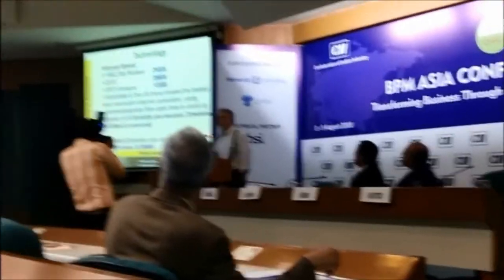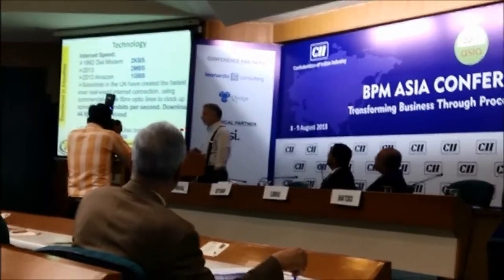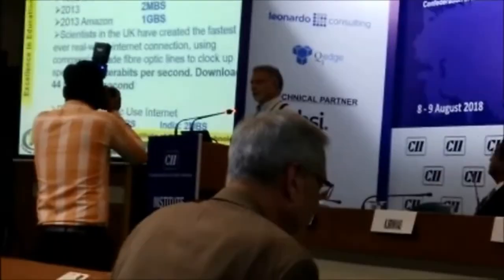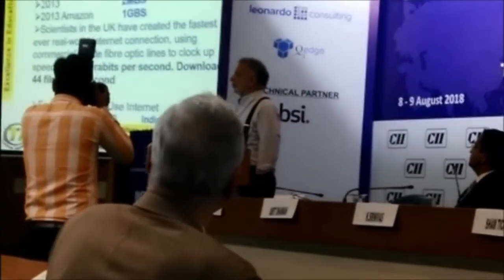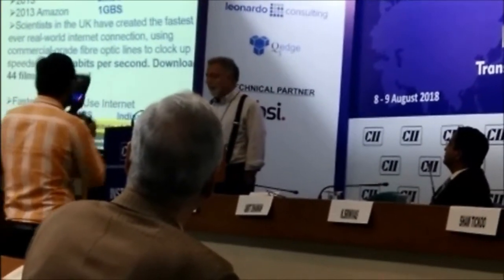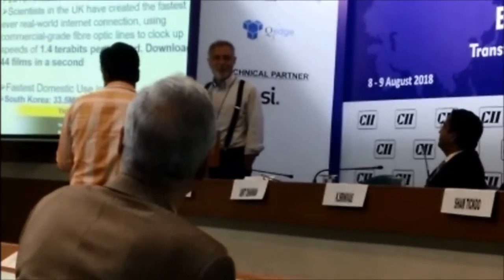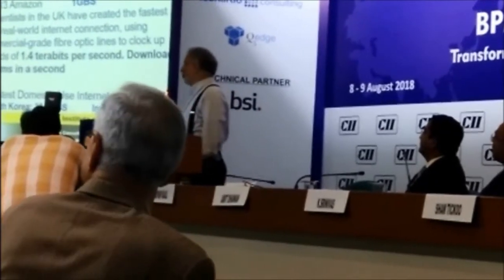Now take internet speed. In 1992, when I started using the internet, it was done in dial-up mode. The speed was about 2 kilobits per second. Then in 2013, it went to 2 megabytes per second. Amazon tested a 1-gigabit-per-second line, and further research in England has gone up to 1.4 gigabits per second. Numbers are fine, but look at the applications: if you download a Hindi movie on Facebook, it takes you half an hour. But with these speeds — 44 movies a second. You press a key, turn your hand, and you have 44 movies downloaded. That's the speed we're going to have in the near future.